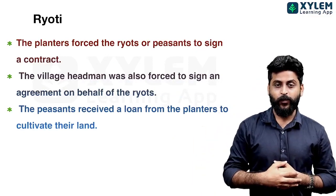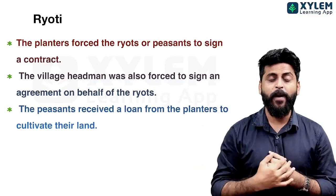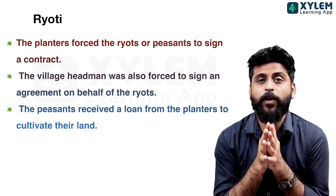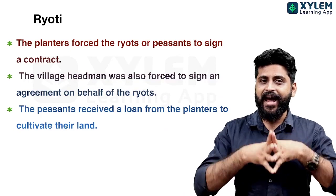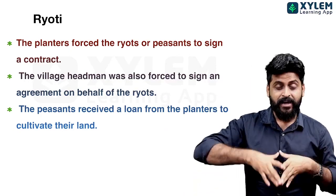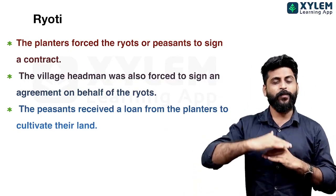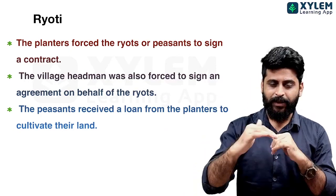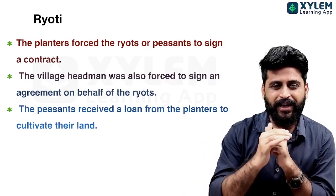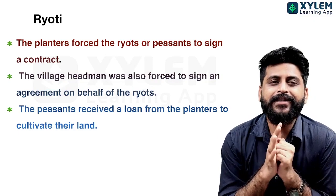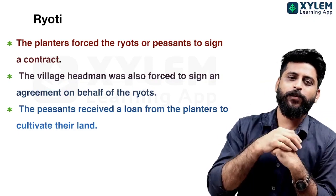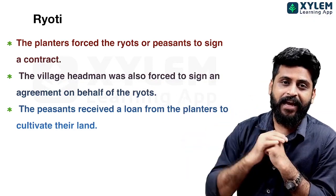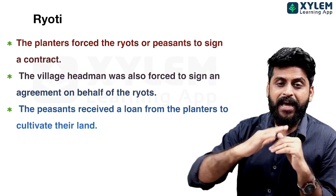This is Raiti Cultivation. The planter forced the peasants — the Raiti — to sign a contract. The peasants were required to sign a contract agreeing to cultivate Indigo.